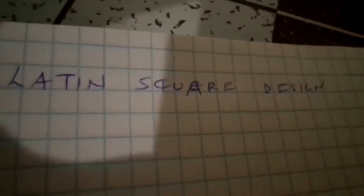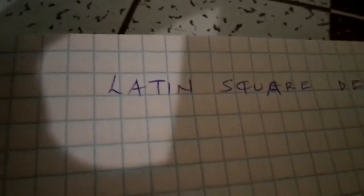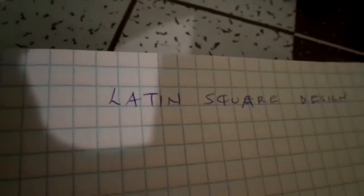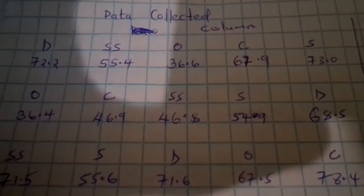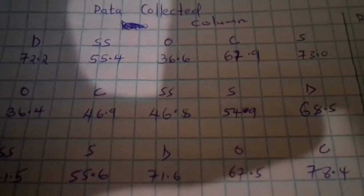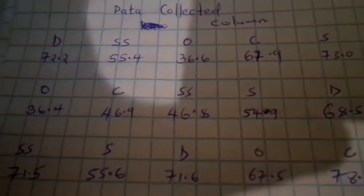Today we want to calculate Latin square design. This is a topic used to analyze data in statistics. You are given data with observations arranged in rows and columns. The observations here include labels such as D, S, O, and C.